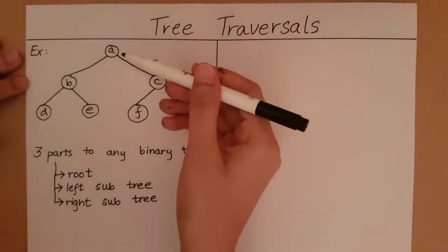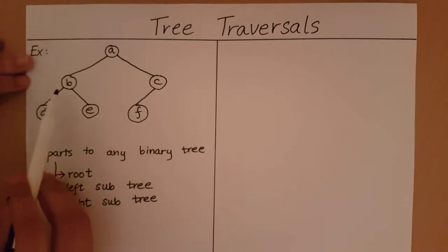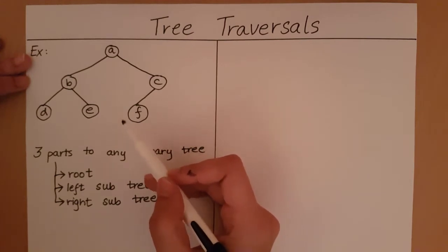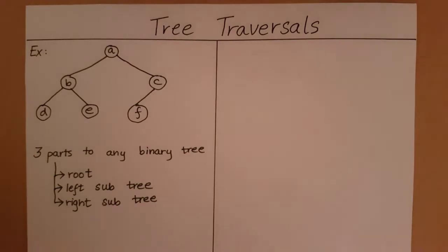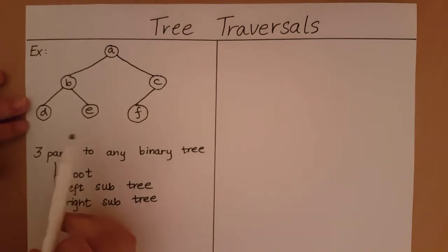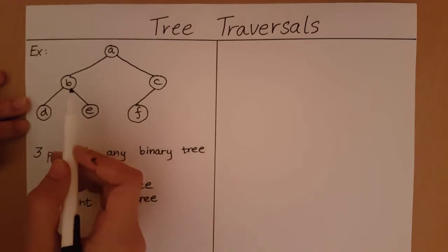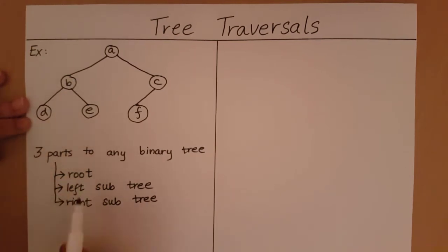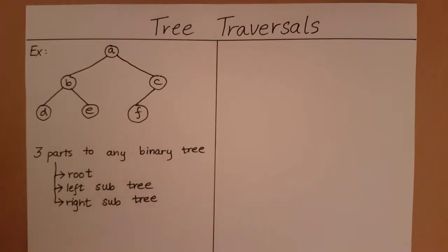In our example, the root is A. The left subtree consists of B, D, and E — or the left subtree is the subtree with root B — and the right subtree is going to be C and F, rooted at C. These subtrees also have their own left and right subtrees. For instance, the subtree rooted at B has root B, a left subtree D, and a right subtree E. So any binary tree is made up of a root, a left subtree, and a right subtree, and those subtrees in turn have again a root, a left subtree, and a right subtree.